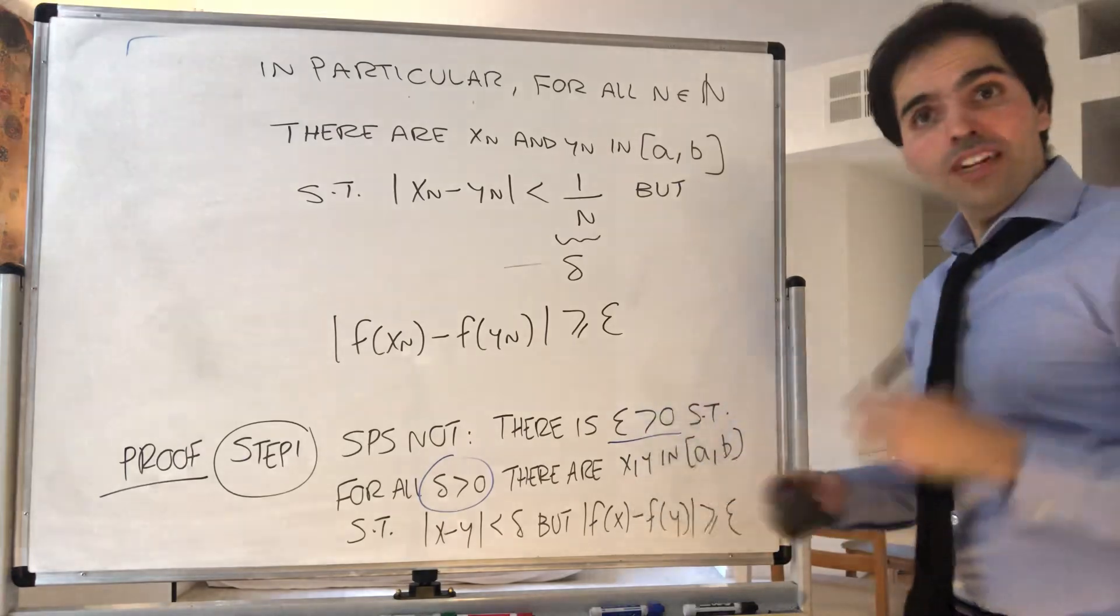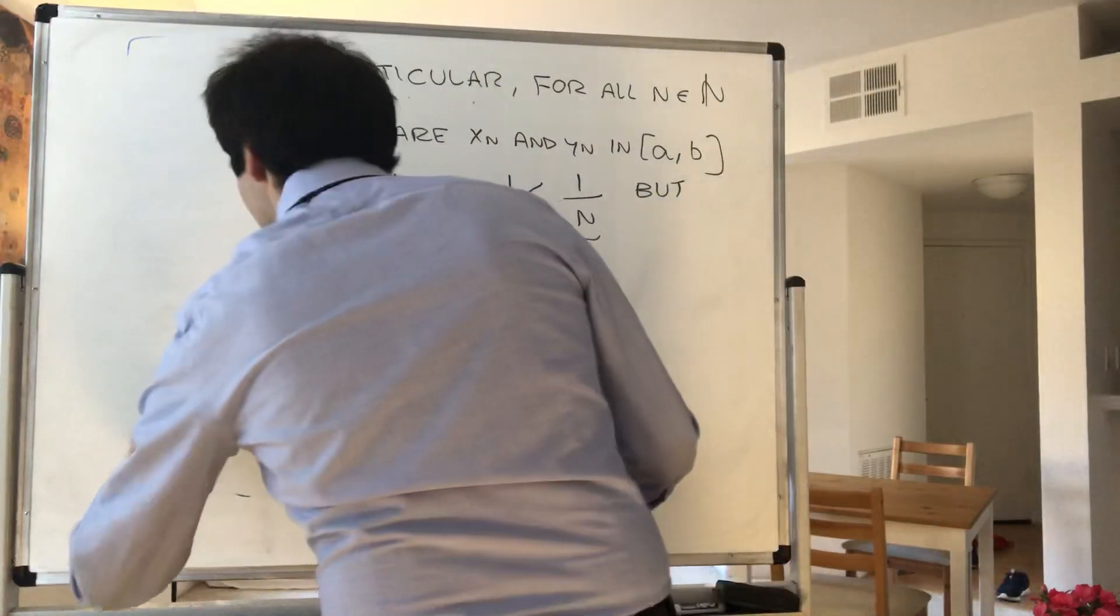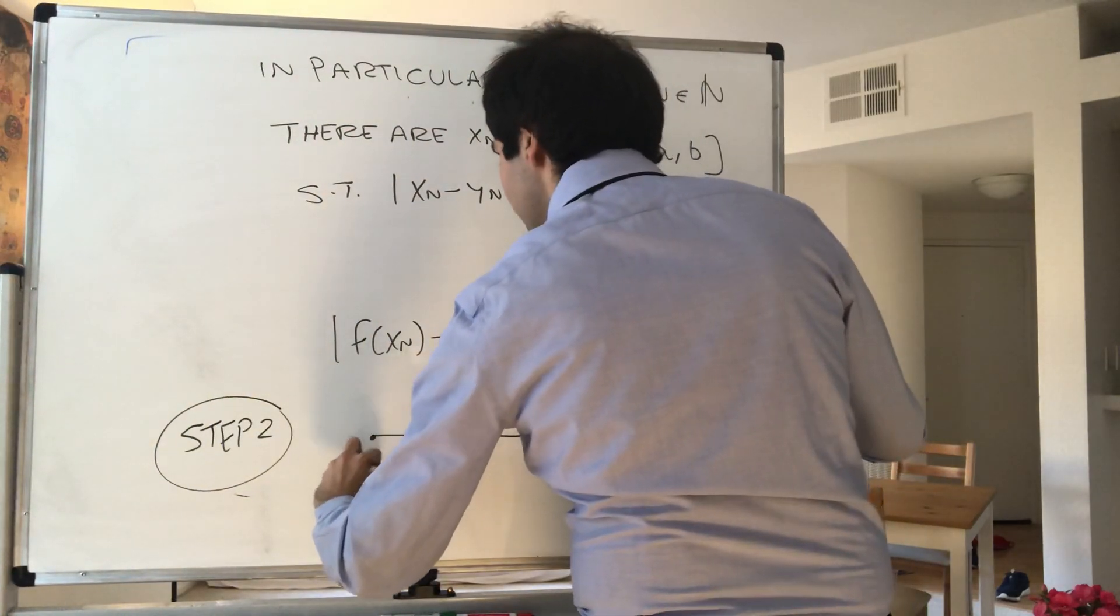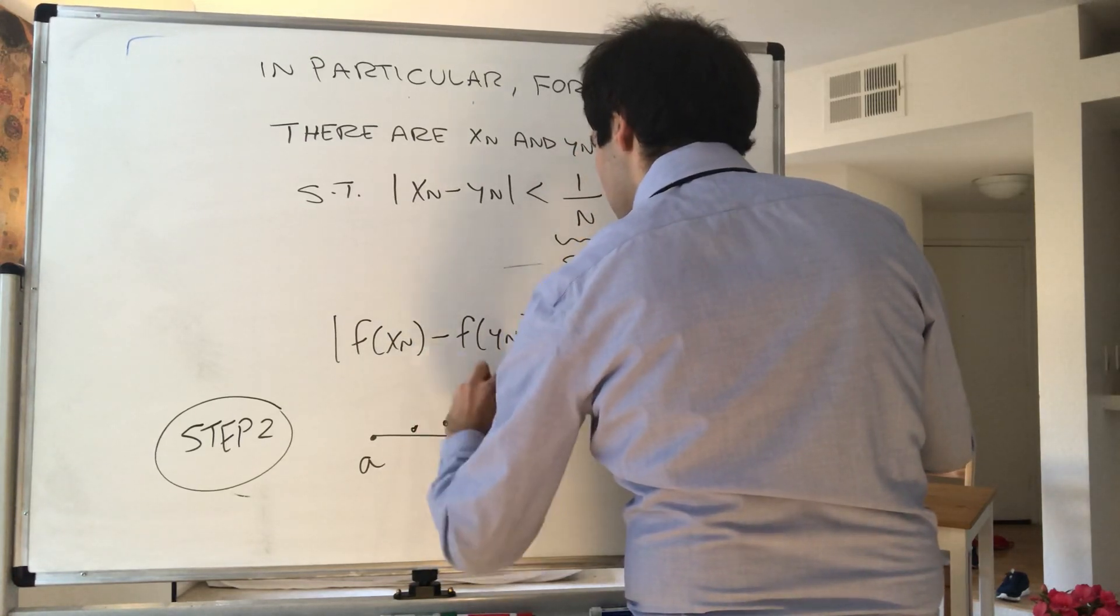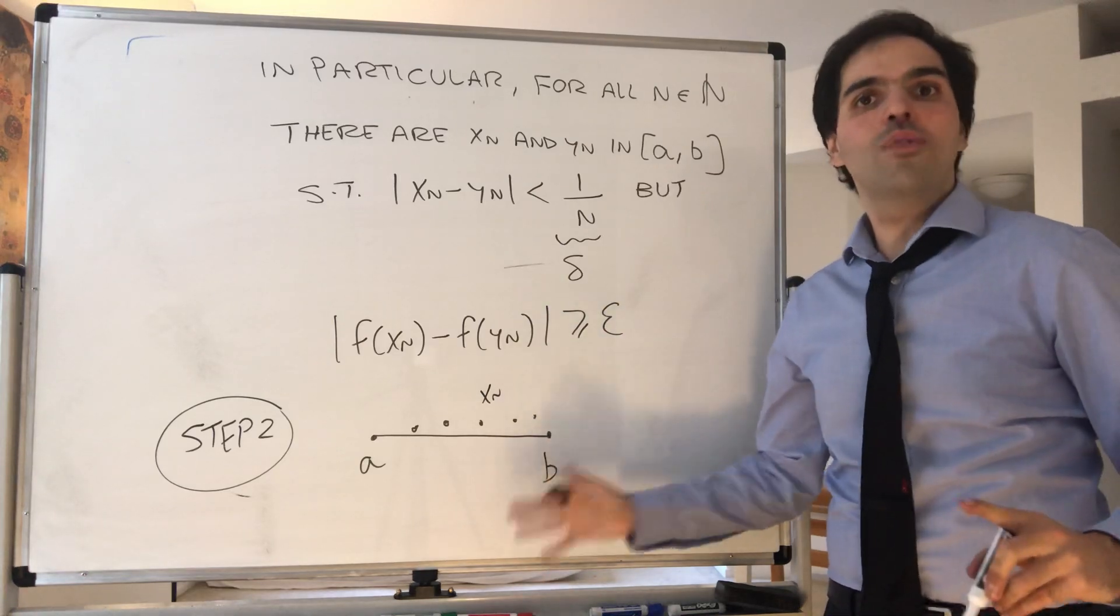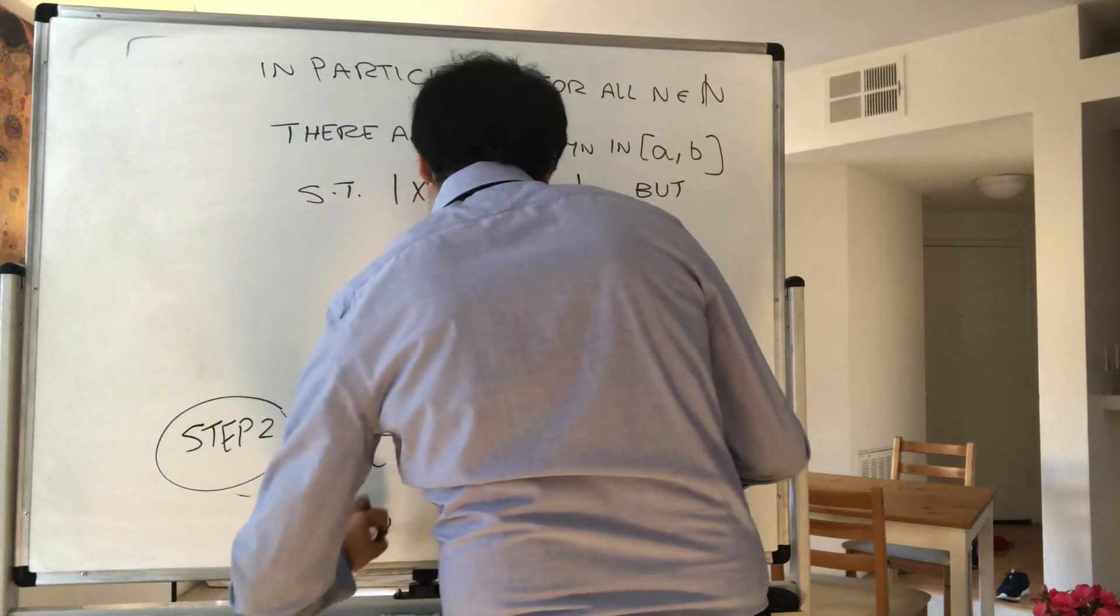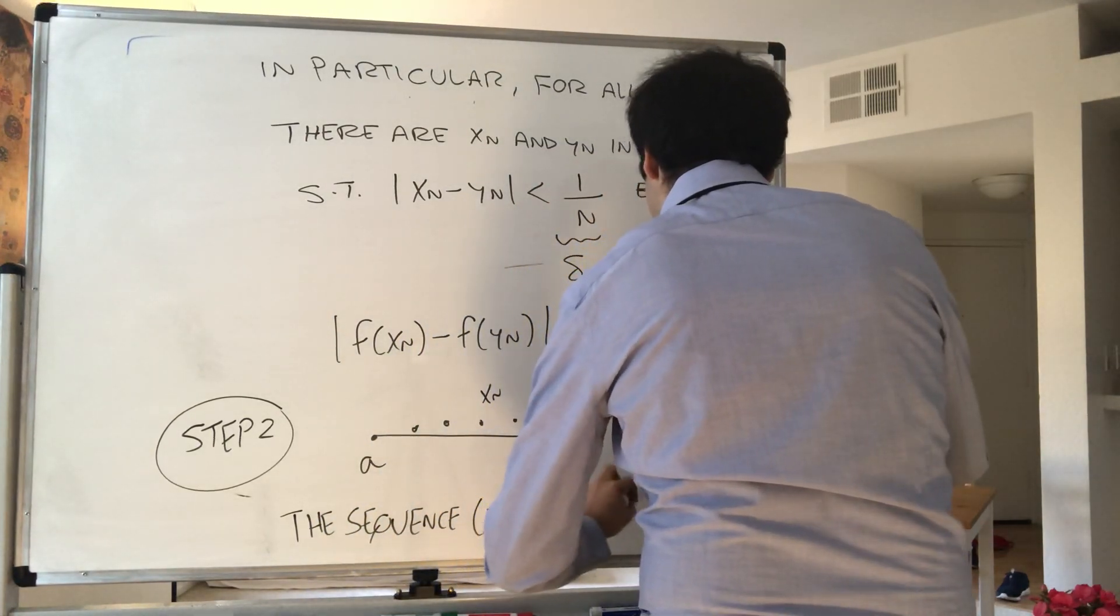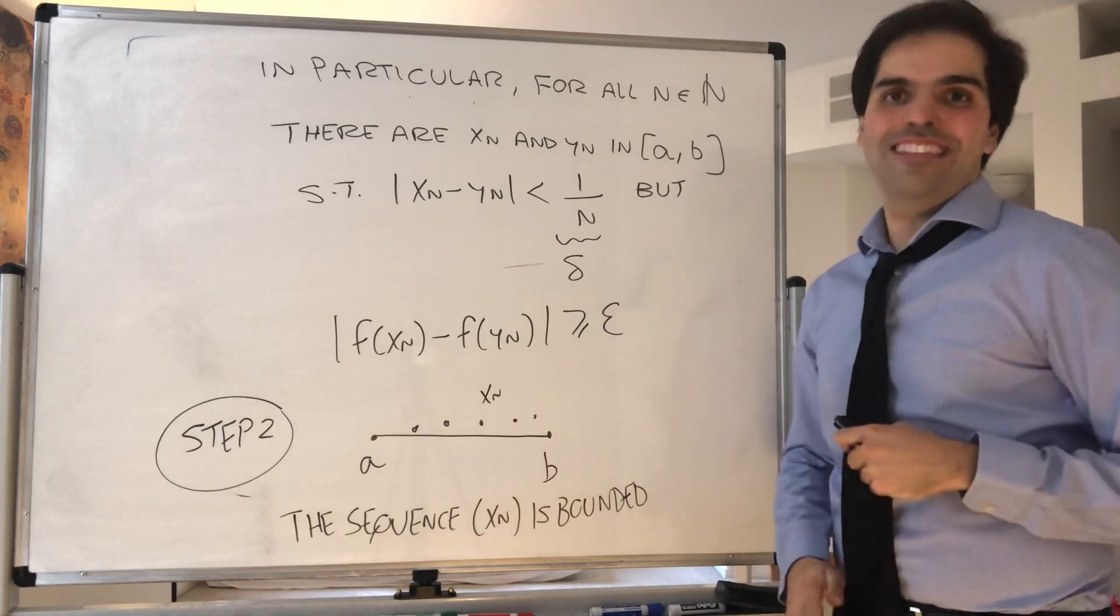All right, now let's look at the sequence xₙ. So maybe step two. Well, the sequence xₙ is a sequence in [a,b], maybe somewhere here. So because it's in [a,b] and this interval is bounded, we actually get that the sequence xₙ is bounded.